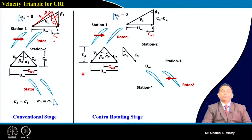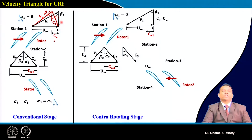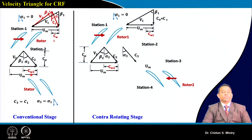What motivates people to adopt this new technology? Looking at the velocity triangle for a conventional stage, suppose the flow enters axially or at some angle to the rotor. The flow coming out from the rotor has a velocity triangle with a whirl component exiting the rotor.